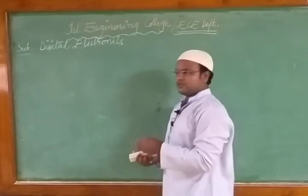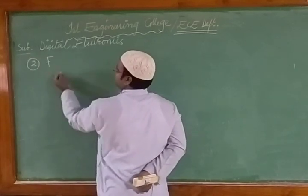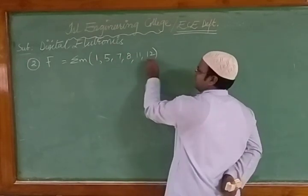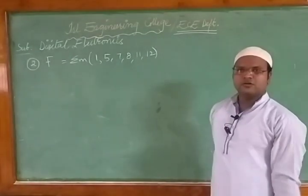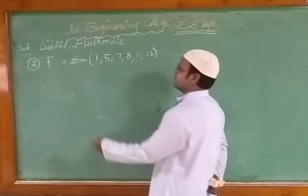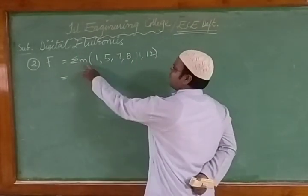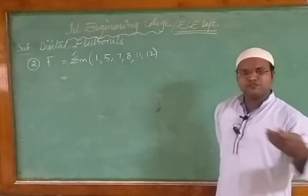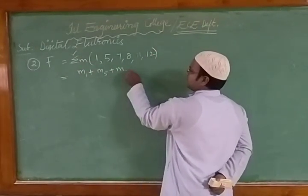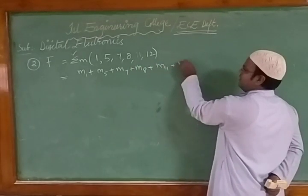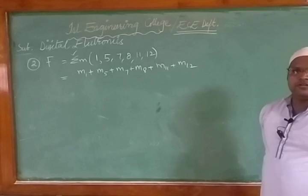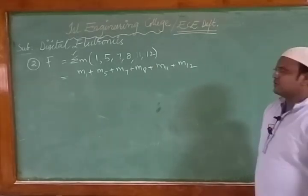Now let us consider a second problem. The Boolean function given is f = Σm(1, 5, 7, 8, 11, 12). They ask us to convert this Boolean function into literals, find the number of minterms, and reduce them. Since the maximum value is 12, and the range 0 to 15 indicates 16 combinations, this is a four-bit input with variables a, b, c, d.